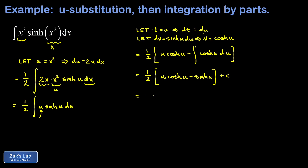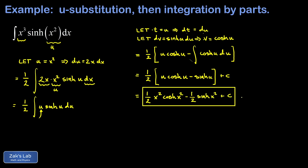It's an indefinite integral, so we add a plus c. Finally, we replace u in terms of x — u equals x squared — and distribute the one half. Substituting gives us one half x squared cosh of x squared minus one half sinh of x squared, plus c. And we're done.